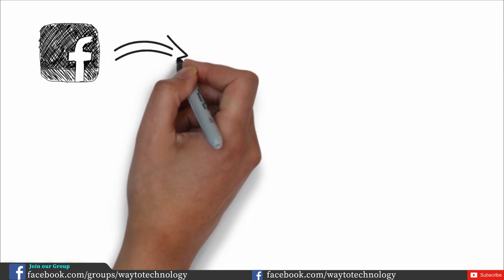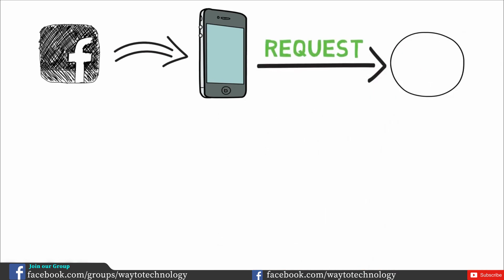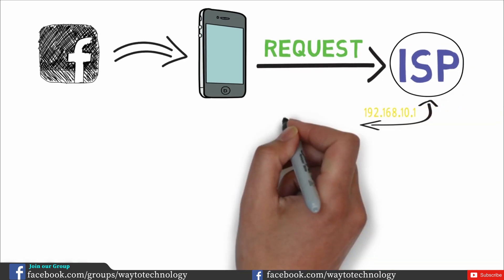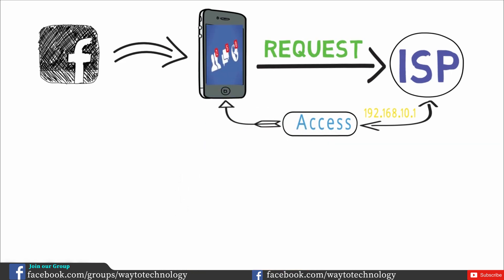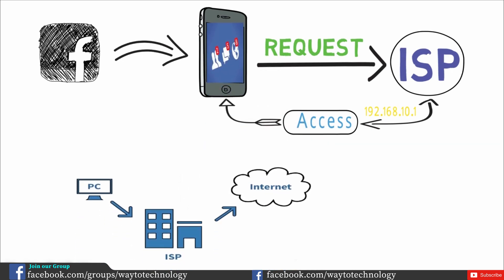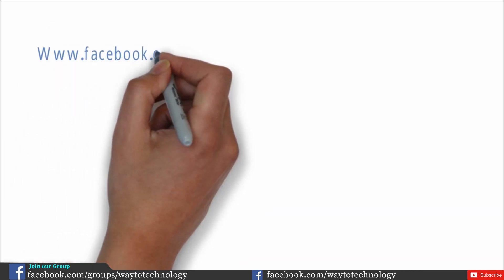So what happens when you use the internet? I open my mobile phone and search on Facebook.com. I request a website using my IP address, and that IP address is read by the server, which then finds the website.